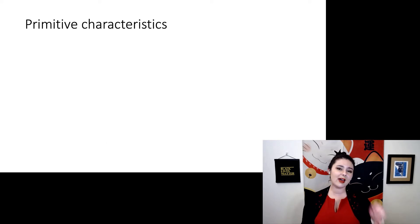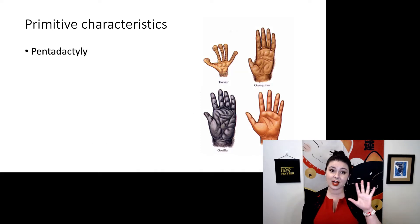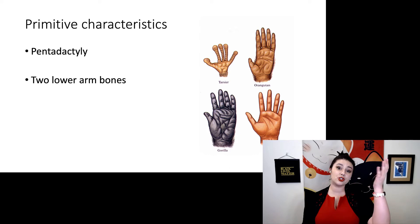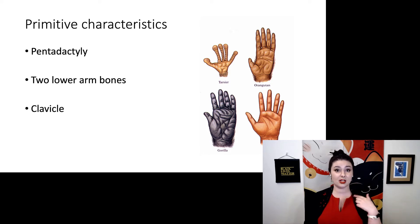We also have pentadactyly, or we have five fingers on our hands and our feet. The very first tetrapods all happen to have five digits, so that's why we inherited this today. We also have two lower arm bones, our radius and ulna, and that's what allows us to twist our forearm. We have a clavicle, and we have a generalized body plan. We are not particularly specialized in any way when you compare us to, say, bats, which are specialized to flight, or dolphins and whales, which are specialized for swimming.